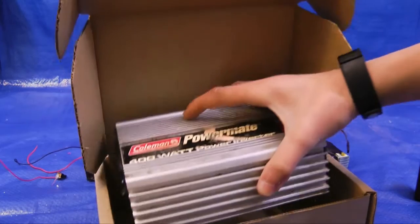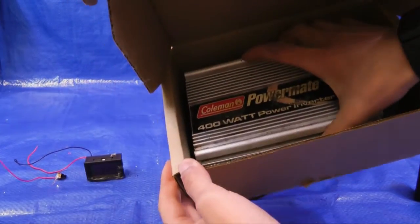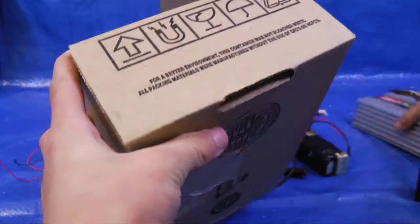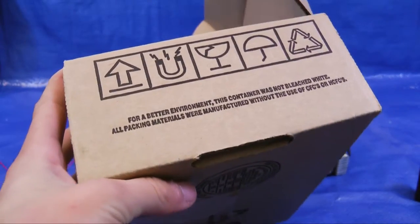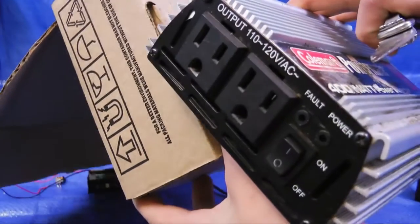So we're going to put the power inverter in the box and see how it fits. Next, cut a hole so the power outlets can go through.